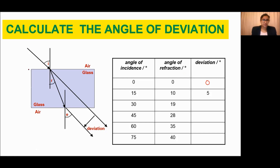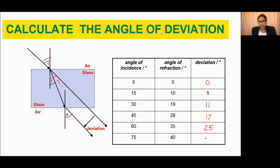How can you calculate this? As you can see here, this angle and this angle — we call them opposite angles. This is the angle of incidence and this is the angle of refraction. The incident angle minus the refracted angle gives you the deviation. So: 0 minus 0 is 0; 15 minus 10 is 5; 30 minus 19 is 11; 45 minus 28 is 17; 60 minus 35 is 25; and 75 minus 40 is 35.